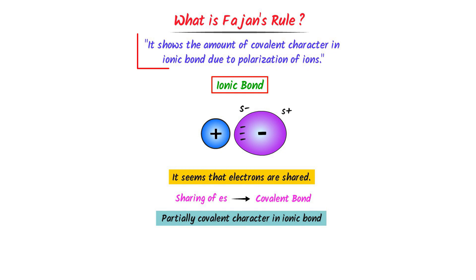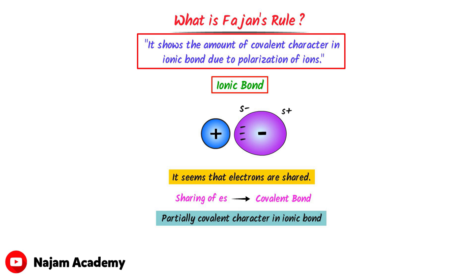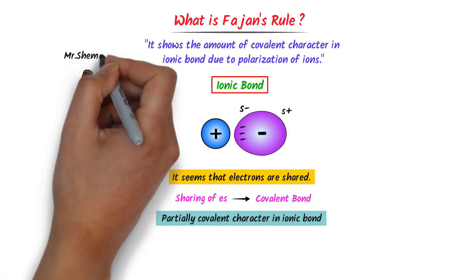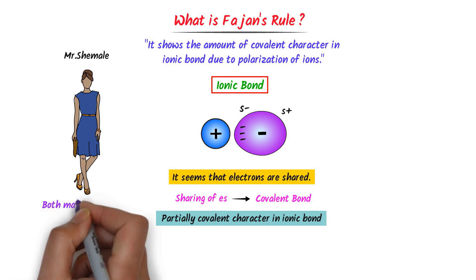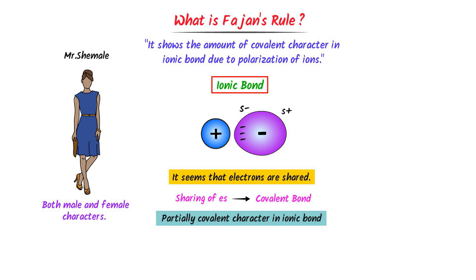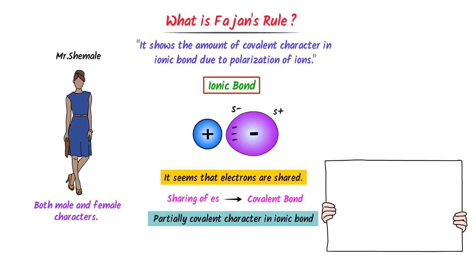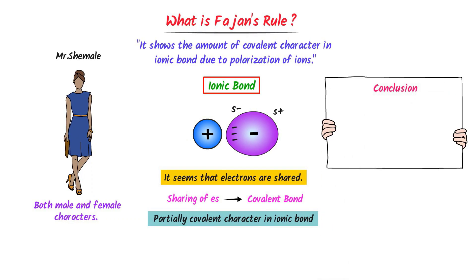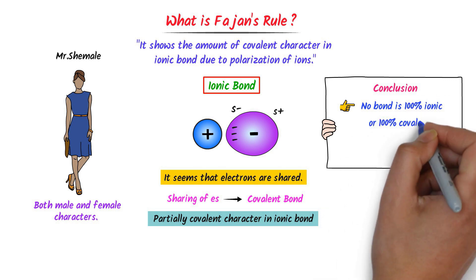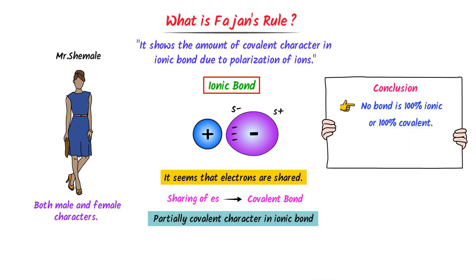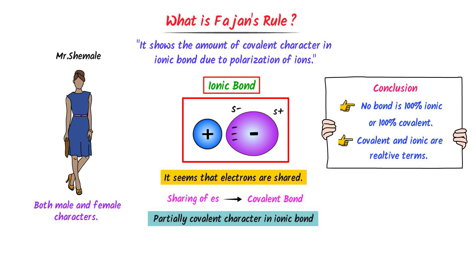Thus, some covalent character is present in an ionic bond. Fajans' Rule shows the amount of covalent character present in an ionic bond due to polarization of ions. Consider Mr. Shemel — he carries both the character of male and female. Similarly, Fajans' Rule teaches that ionic bonds also carry some character of a covalent bond. In conclusion, no bond is 100% ionic or 100% covalent — rather, covalent and ionic are relative terms that both exist at the same time in any chemical bond.